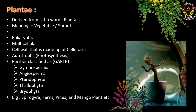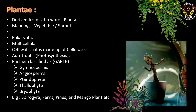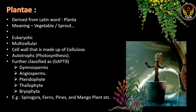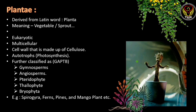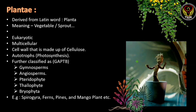The fourth kingdom is Plantae, derived from the Latin word 'planta' meaning vegetable or sprout. The cell type is eukaryotic and multicellular, and the cell wall is made up of cellulose. The mode of nutrition is autotrophic, meaning they produce their own food using photosynthesis. Plantae is further classified as gymnosperms, angiosperms, pteridophyte, thallophyte and bryophyte. Examples are spirogyra, ferns, pines, mango plant and every type of plant around us.